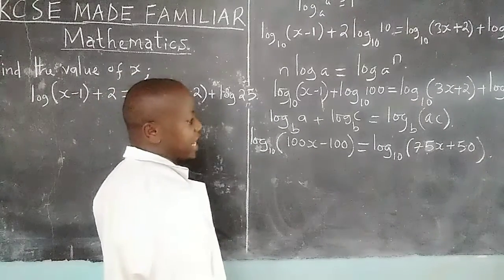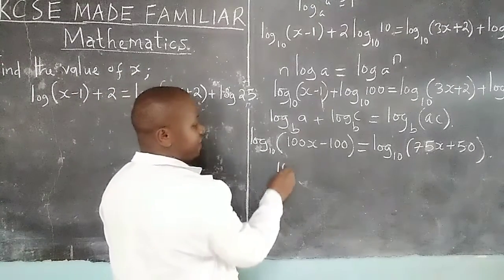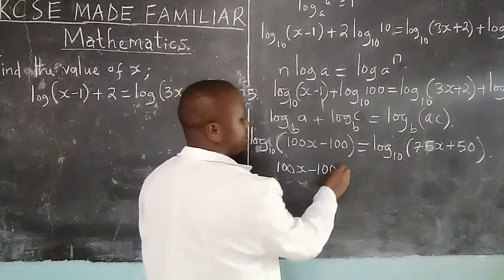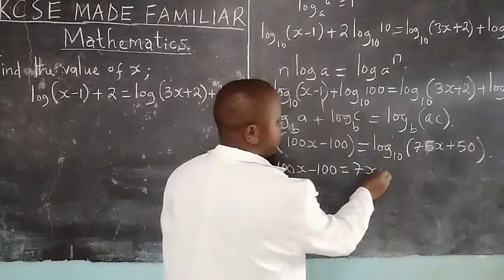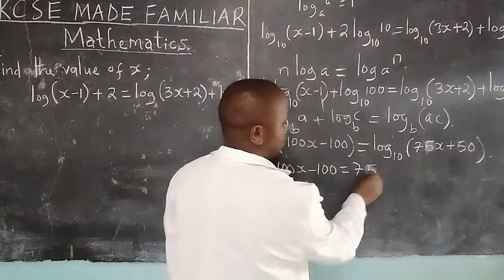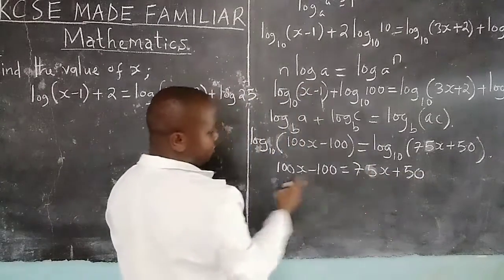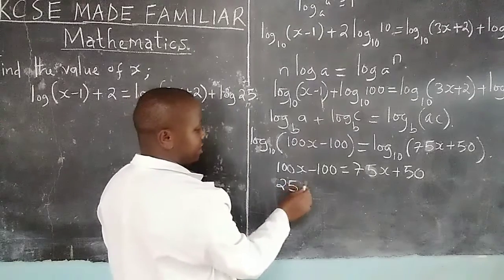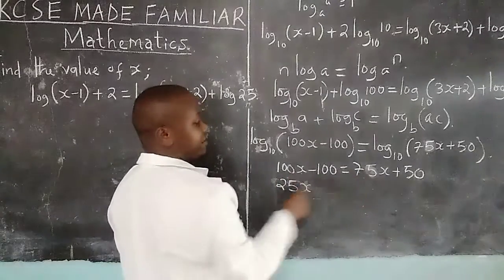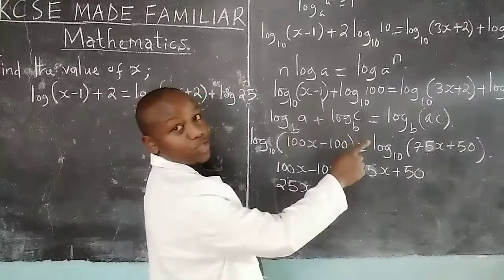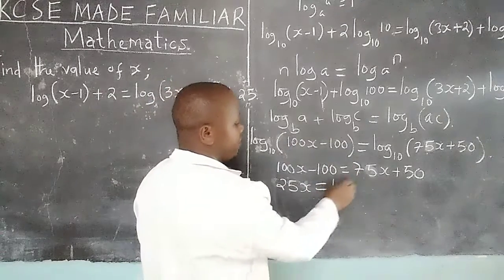So at that level now, we can drop logarithms, then we have 100x - 100 = 75x + 50, such that 100 taken to this side will be 25x, because of 100 minus 75, then 100 taken to the other side will give us 150.